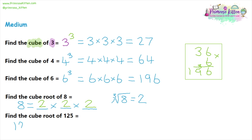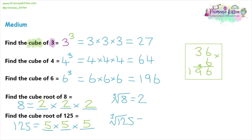For the cube root of 125, we're looking for three numbers that are all the same and multiply together to make 125. We know two cubed is eight, three cubed is 27, four cubed is 64, and six cubed is 216 — too large. So let's try five: five times five is 25, and 25 times five is 125. So the cube root of 125 is five.